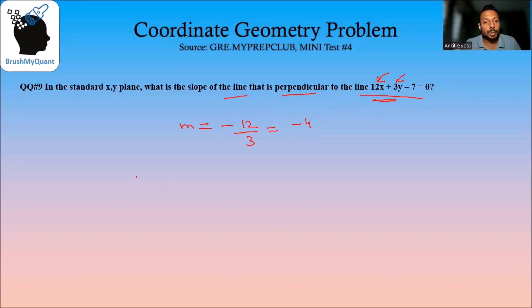And we know if there are 2 lines which are perpendicular and let's say their slopes are m and m1, then the product of their slopes will be equal to -1. That means -4 multiplied by m1 is equal to -1. That means m1 will be equal to 1/4.